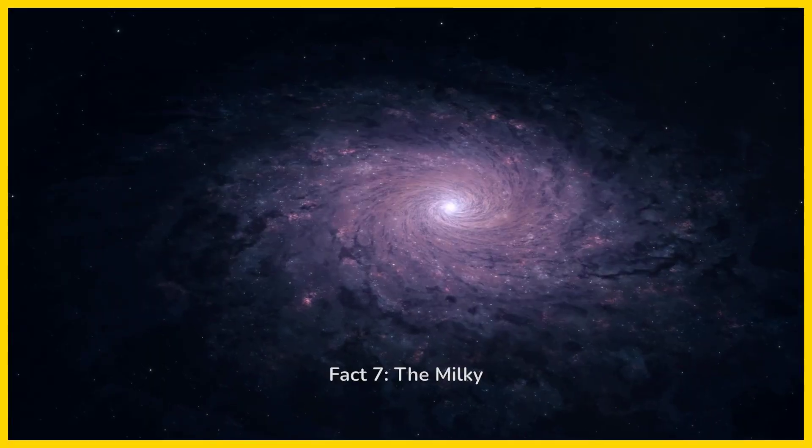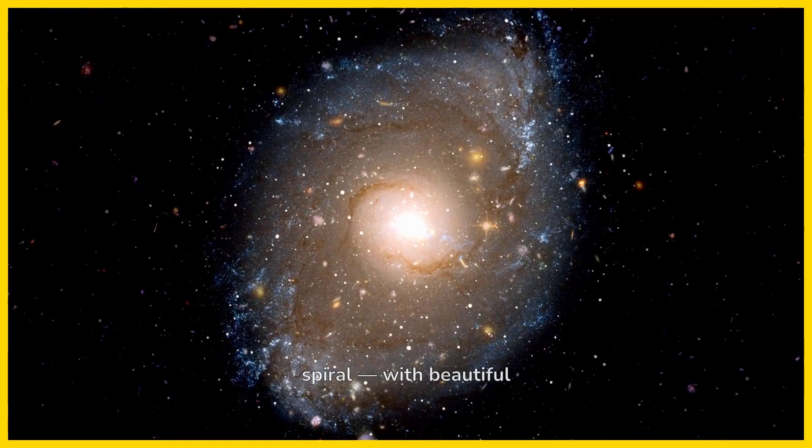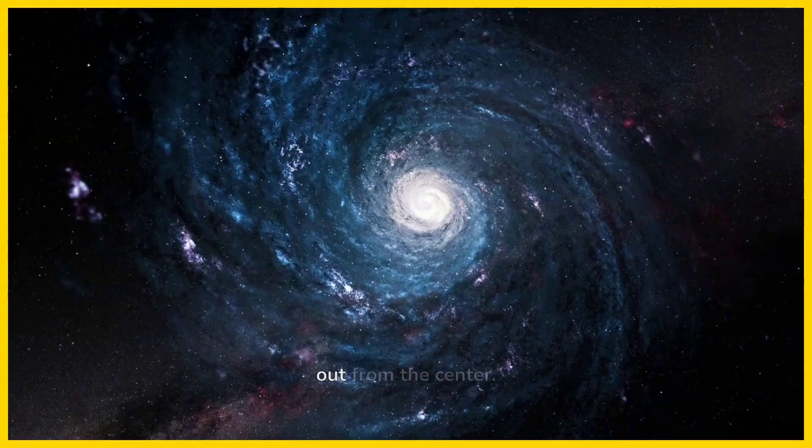Fact 7. The Milky Way is shaped like a barred spiral, with beautiful curved arms spiraling out from the center.